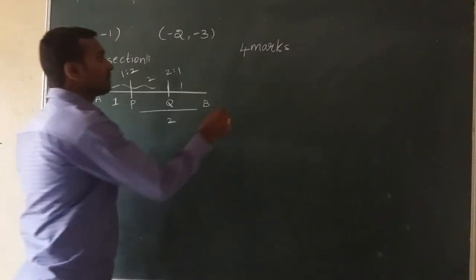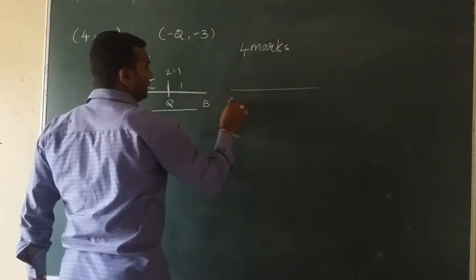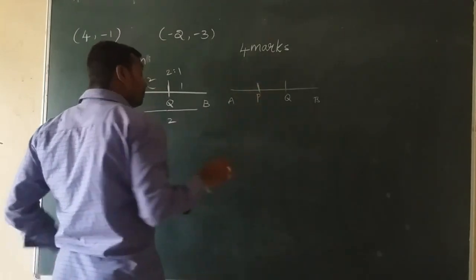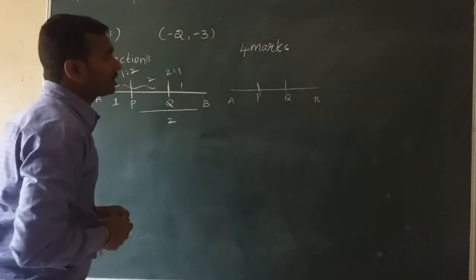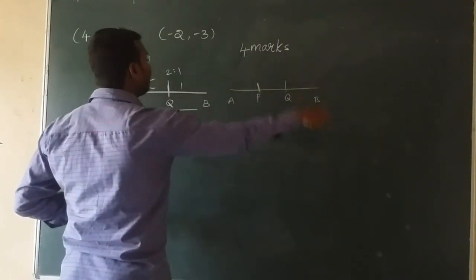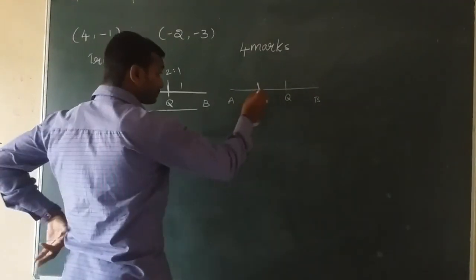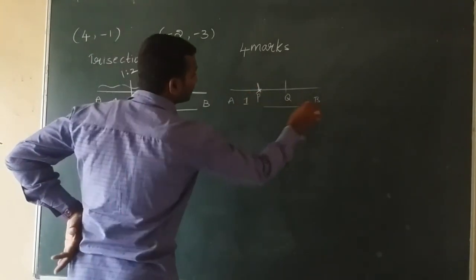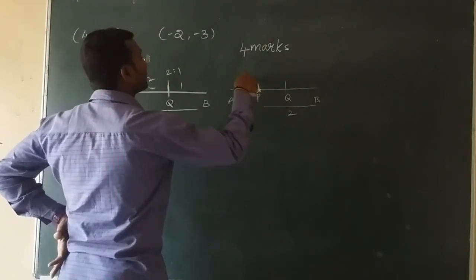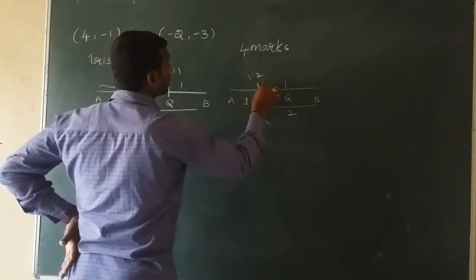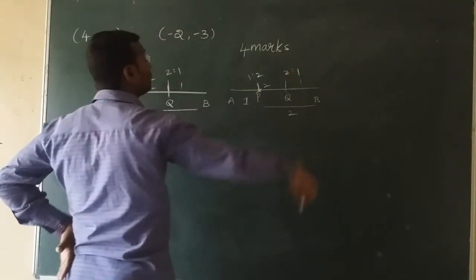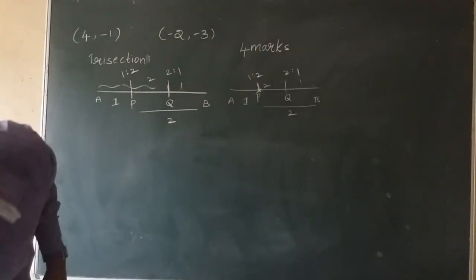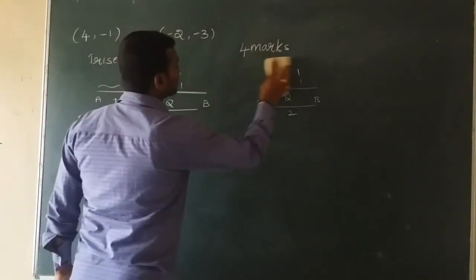P divides the line segment with 1 part on the left and 2 parts on the right, so P divides in ratio 1 is to 2. Q divides with 2 parts on the left and 1 part on the right, so Q divides in ratio 2 is to 1. The points which divide the line segment in ratio 1:2 and 2:1 are called points of trisection.